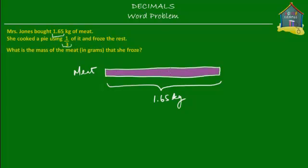Now what this one third means is that if this block that represents the mass of the meat is divided into three parts, then one part out of those three parts is what she used for making the pie. So let's divide this block into three equal parts. Now what she did was she used one third of this block of meat, which means one of the three parts. She used one of the three parts for making a pie. So one of the three parts was used for making the pie and the rest she froze. So this part she froze and this part also she froze.